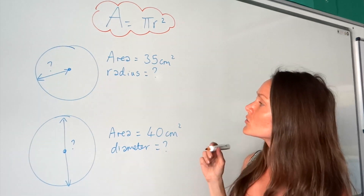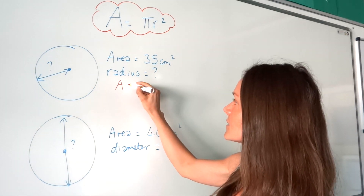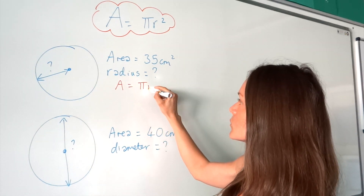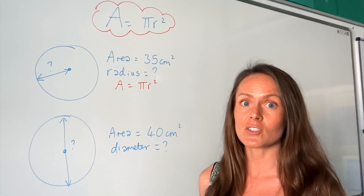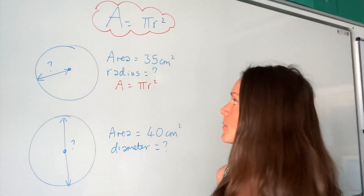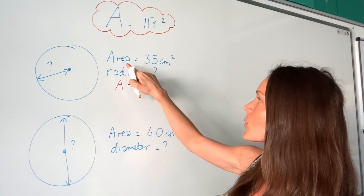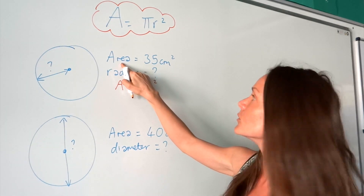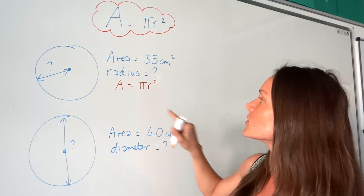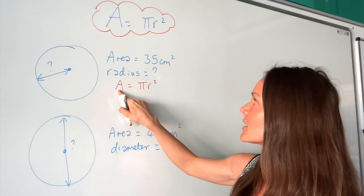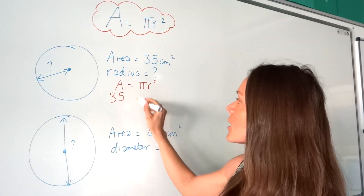To start this question, I'm going to begin by writing down the formula: A equals pi r squared, and then I'm going to substitute in the information given in the question. In this question, I know that the area is 35 cm squared, so I'm going to change the letter A, because that's area, to 35.